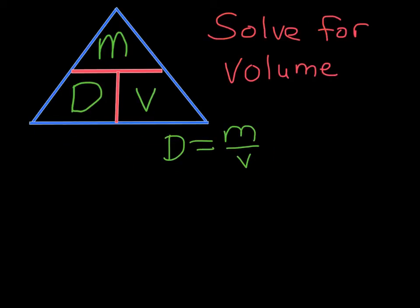Now let's look at the triangle and we'll solve it for volume. So we're going to put our circle on volume and see if then the volume equals mass divided by density. So let us manipulate our equation.